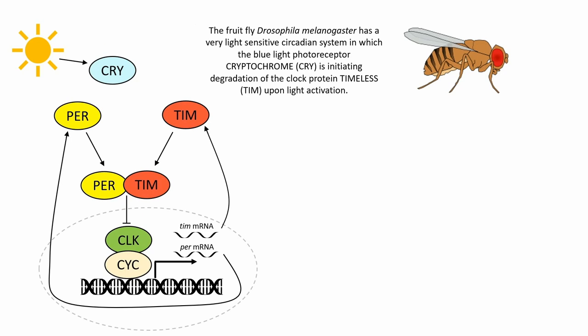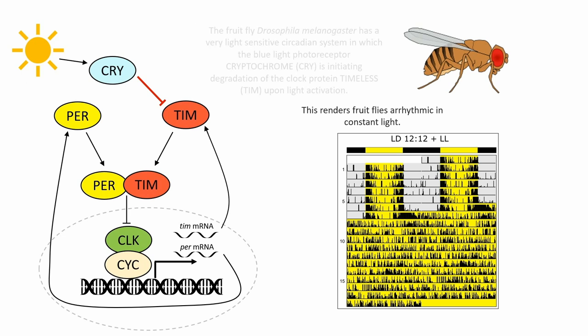The fruit fly Drosophila melanogaster has a very light-sensitive circadian system in which the blue-light photoreceptor Cryptochrome is initiating degradation of the clock protein timeless upon light activation. This renders fruit flies arrhythmic in constant light.